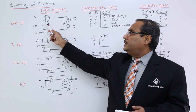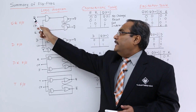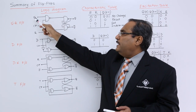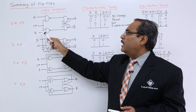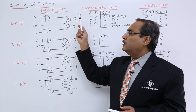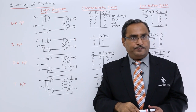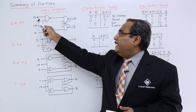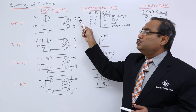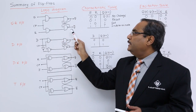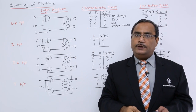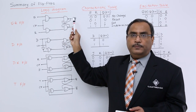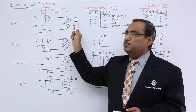Wherever NAND logic is there, S will face directly Q. So if S is there, then Q will be there. If you mark this one S, then Q should be written here and the other one will be Q-bar. But if you go for AND-NOR logic, then S will be having Q-bar and R will be having Q. So remember: for NAND-NAND, S will be facing Q. For AND-NOR, S will be facing Q-bar.